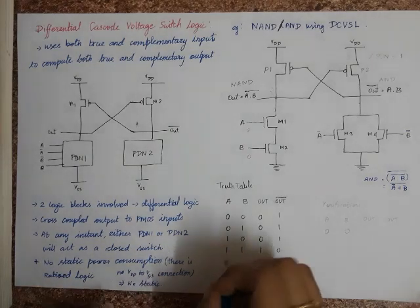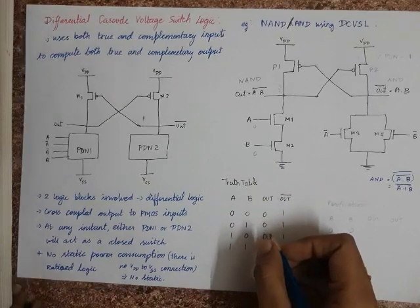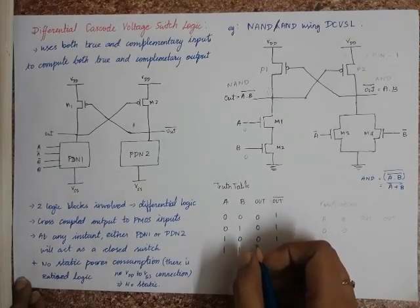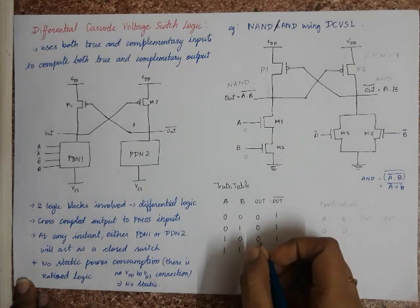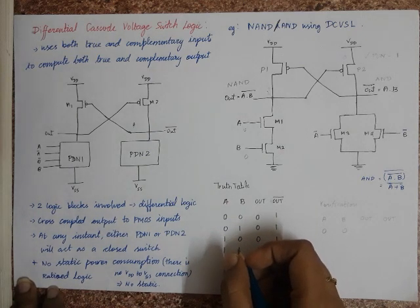The topic we are going to see is differential cascode voltage switch logic. DCVSL is basically used to eliminate static power dissipation and also to get rail-to-rail swing, a new type of load.